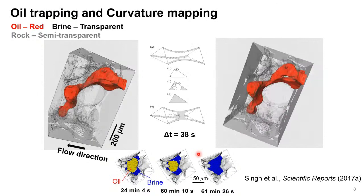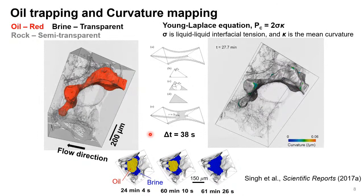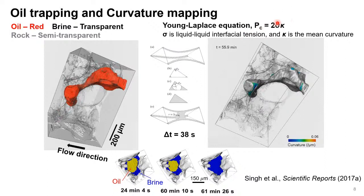When the point comes where there's no contact on the solid surface, we get a pressure disequilibrium and disconnection because of snap-off. We can calculate this pressure — we did quite a lot of calculation with curvature mapping, and from the Young-Laplace equation we were able to get local pressures inside the pores. Further information is available in the cited paper, with more details regarding the timescales and pressure disequilibrium.